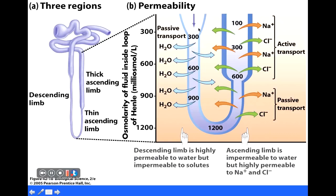The descending limb of the loop of Henle is permeable to water but not to salt. The ascending limb is permeable to sodium chloride but not to water. Keep that in mind as we discuss what happens as filtrate makes its way through the loop of Henle.